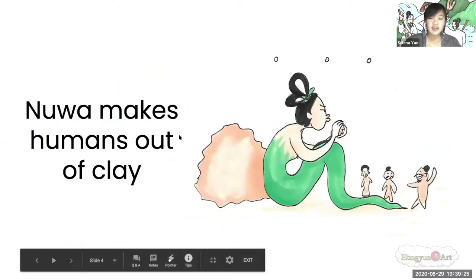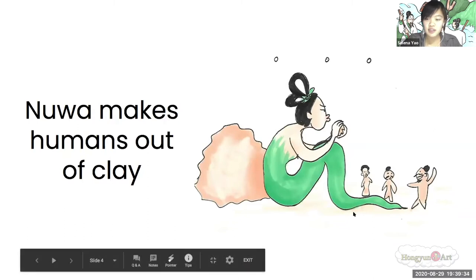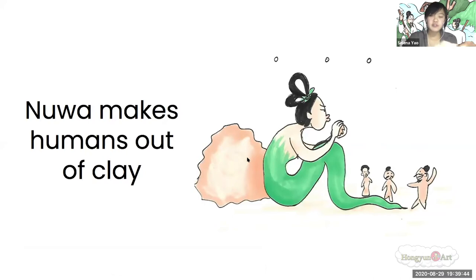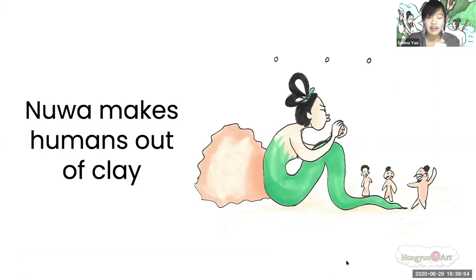And next come the humans. Every civilization also has their own theory about how humans were created. In Chinese history, we like to think that this snake lady called Yua made the humans. She was doing that thing where you take the clay and you individually make the humans — and here you go, you have some humans.